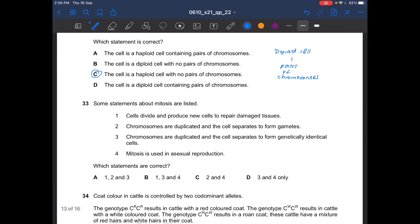Next question. Some statements about mitosis are listed. Which statements are correct? Mitosis. Cells divide and produce new cells to repair damaged tissues. That is correct. Chromosomes are duplicated and a cell separates to form gametes. This is incorrect, this is meiosis. Chromosomes are duplicated and a cell separates to form genetically identical cells. That is correct. Mitosis is used in asexual reproduction. That is also correct. So the answer should be 1, 3, 4, which is B.